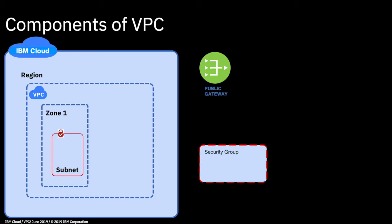Within IBM Cloud, we're going to select a region — I'm going to select the London region because that's closest to where I live. In that region, I'm going to create my virtual private cloud, then create my first subnet, which will be in London Zone 1. Within that subnet there'll be an access control list to control access in and out, created by default. It will also have a default security group and a public gateway for internet access. Let's cross over to cloud.ibm.com.